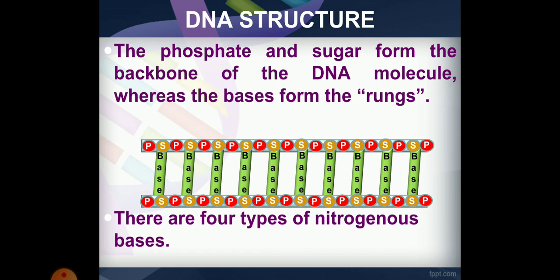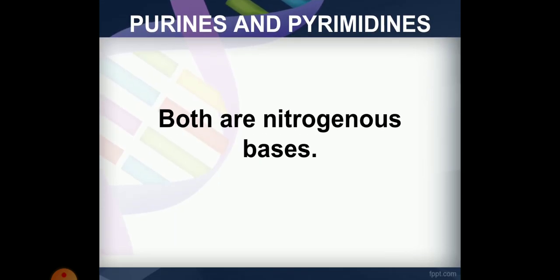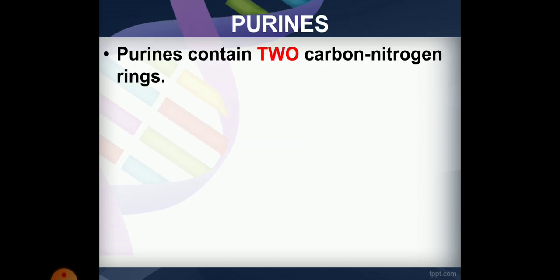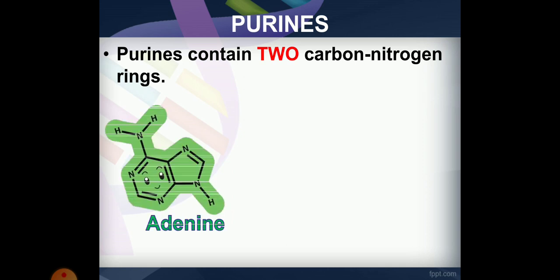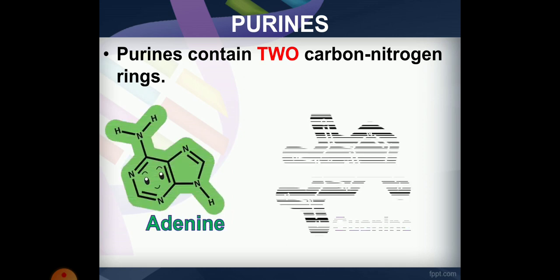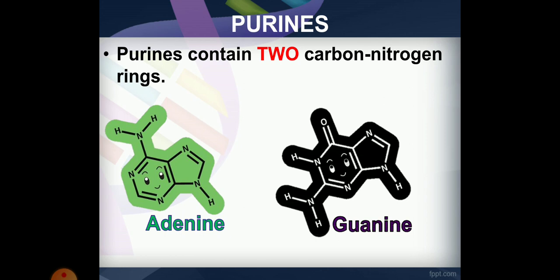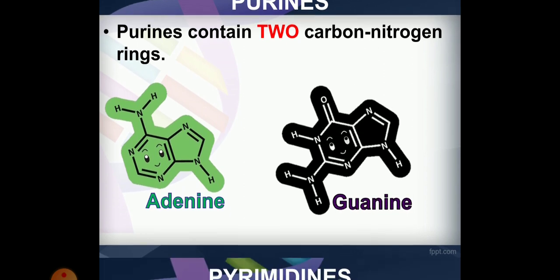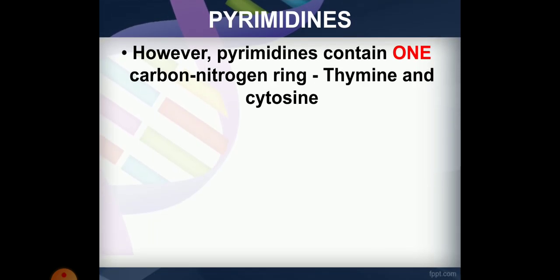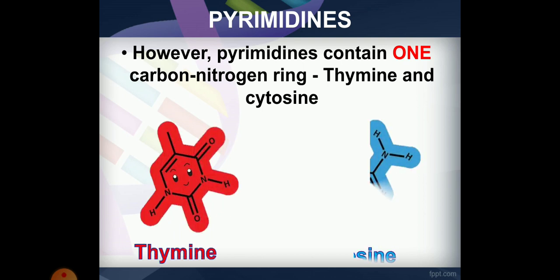There are four types of nitrogenous bases. They are divided into purines and pyrimidines. Purines have two carbon-nitrogen rings — adenine and guanine. Pyrimidines have one carbon-nitrogen ring — thymine and cytosine.